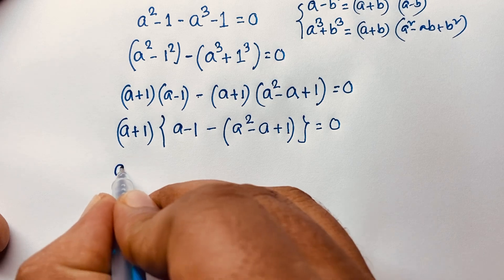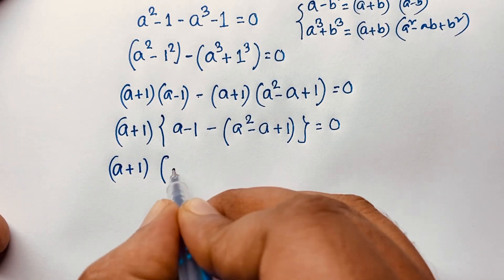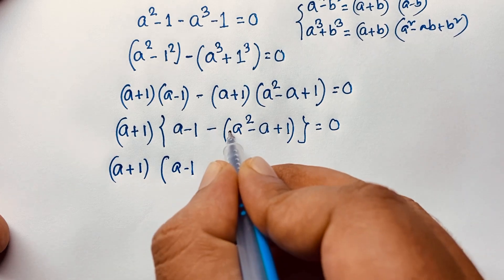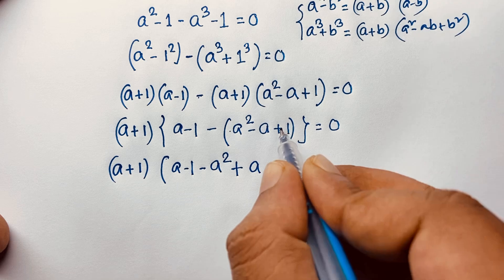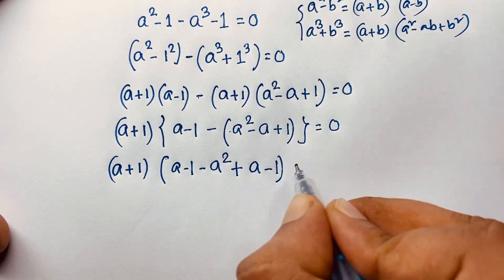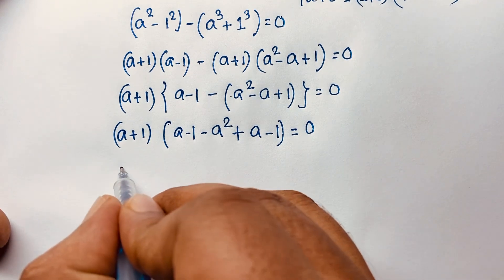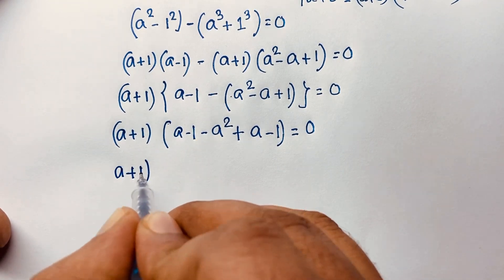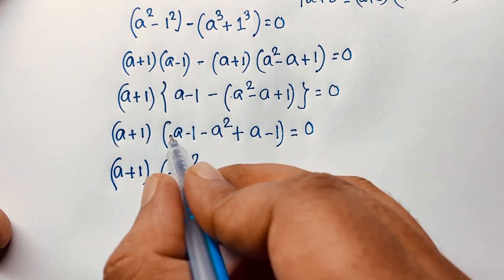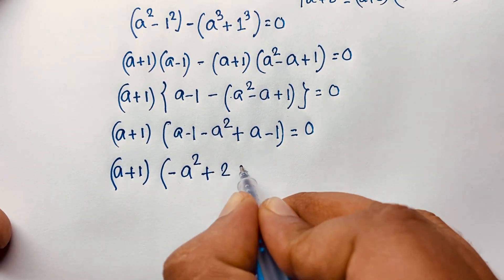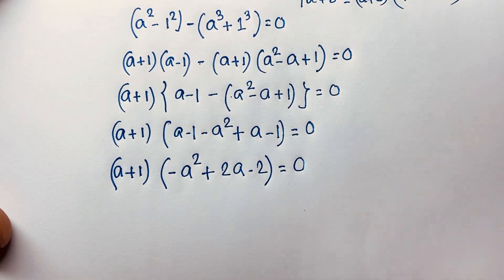Expanding the bracket: (a − 1) minus a squared plus a minus 1. Combining like terms: minus a squared, then a plus a gives 2a, and minus 1 minus 1 gives minus 2. So we have (a + 1)(−a squared + 2a − 2) is equal to 0.